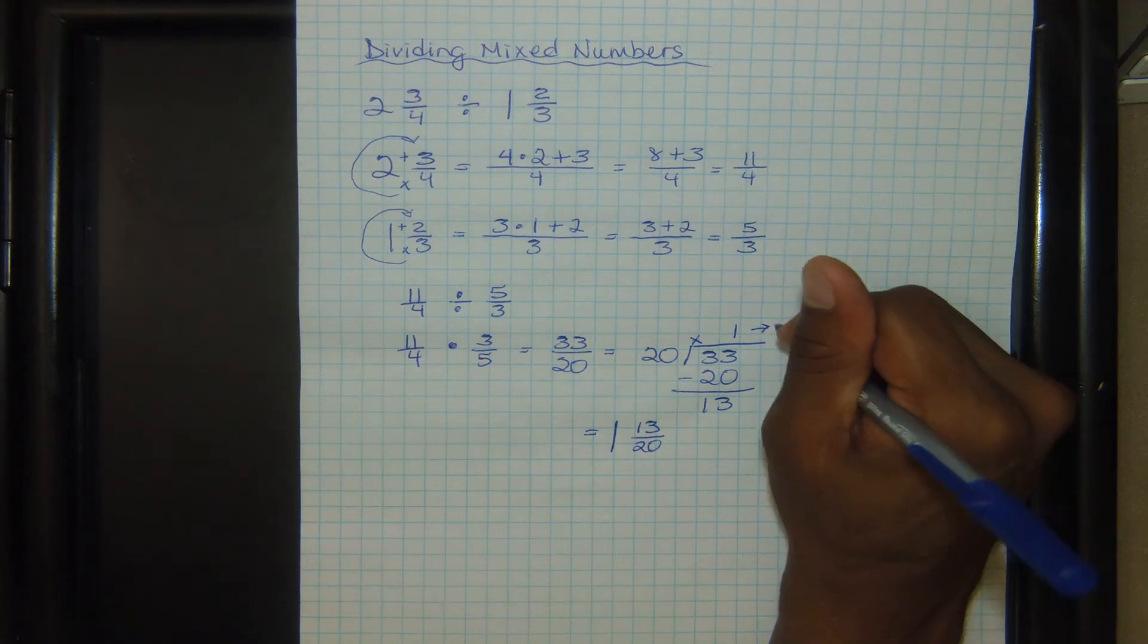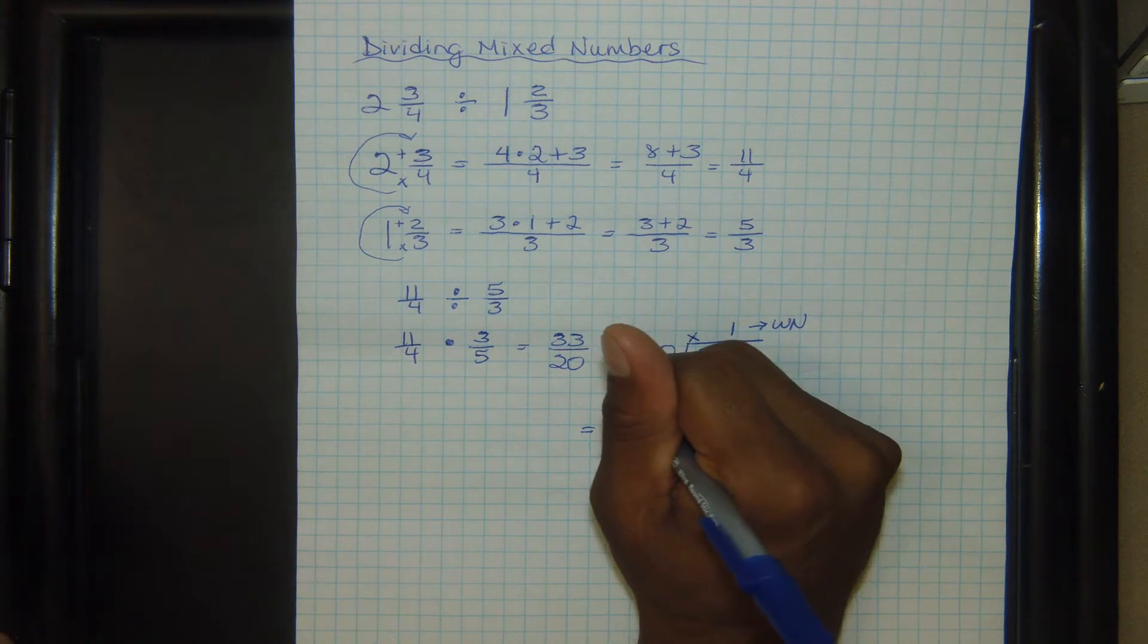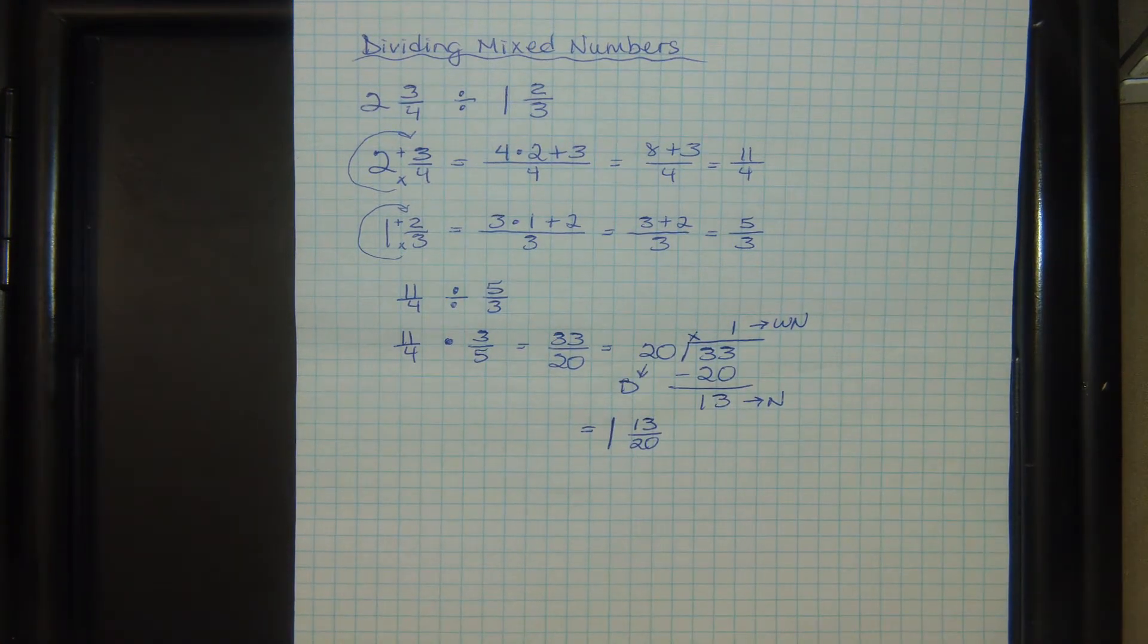And then, just in case we forgot, this is the whole number. This is the numerator. And then twenty becomes the denominator, or it's still the denominator.